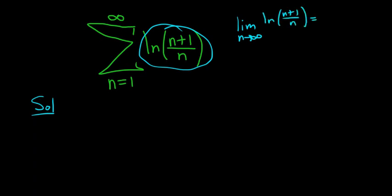So when you do this, these degrees are the same. So the limit here is the ratio of the leading coefficients. So there's a 1 here and there's a 1 here. So you just get the ln of 1 over 1, which is 1. And the ln of 1 is 0, so the n-th term test fails. So that was completely useless.